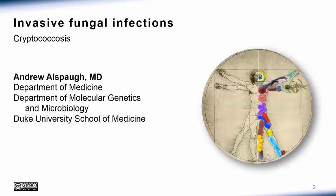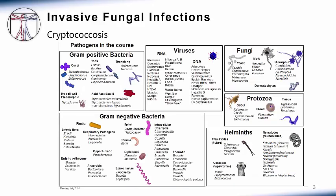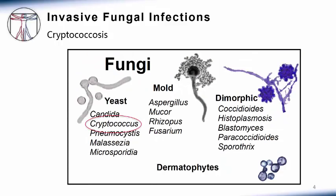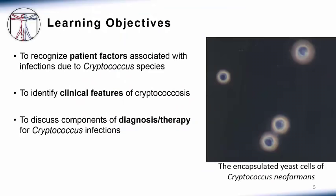This is Andy Allspot from Duke University School of Medicine. In this lecture we will be discussing the disease known as cryptococcosis. On our pathogen map in the fungal kingdom, the etiology of this infection is Cryptococcus neoformans, one of the fungi that grows primarily in the yeast-like form. This image on the right is most familiar to clinicians: a yeast cell surrounded by a large capsule.